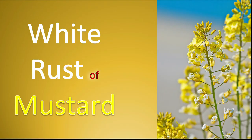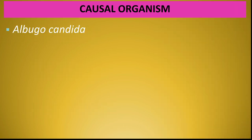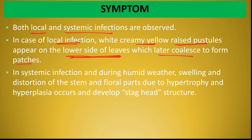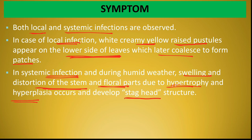अब देखते हैं White Rust of Mustard। White Rust is caused by a pathogen Albugo candida. Symptom: Two types of symptoms appear — local symptom and systemic symptom. In case of local symptom, white, creamy, yellow raised pustules appear on the lower side of the leaves which later coalesce to form larger patches. In systemic infection, swelling and distortion of the stem and floral parts due to hypertrophy and hyperplasia occur, developing a stag head structure.